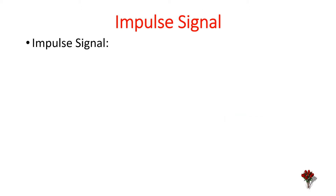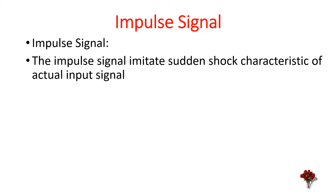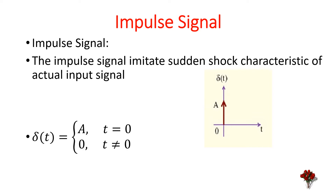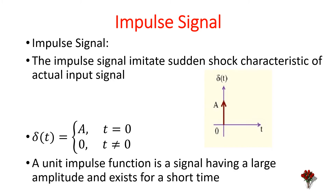Impulse signal. The impulse signal imitates the sudden shock characteristic of the actual input signal. Mathematically, the impulse signal is represented as δ(t) = a when t = 0, and δ(t) = 0 for t ≠ 0. A unit impulse function is a signal having a large amplitude and exists for a short time.